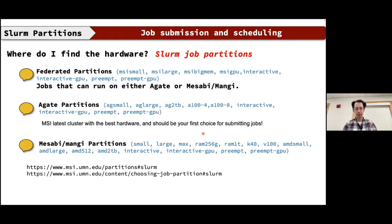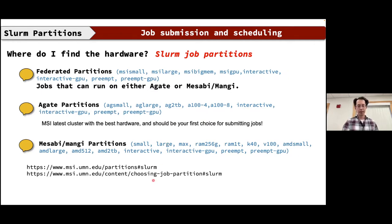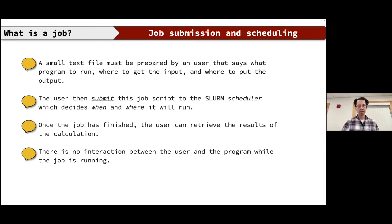The a100-4 partition has four-way A100 GPUs, and a100-8 has eight-way A100 GPUs — very high-performance GPU compute nodes. We'll go into more detail about the preempt and interactive partitions later in the tutorial. Remember to check the links for more information about partitions.